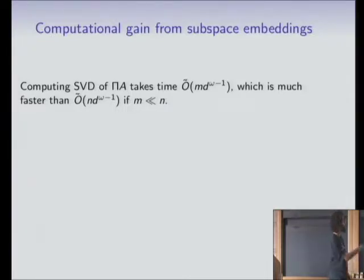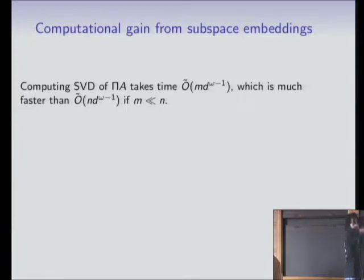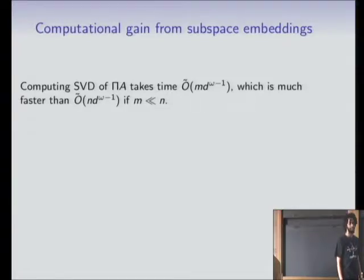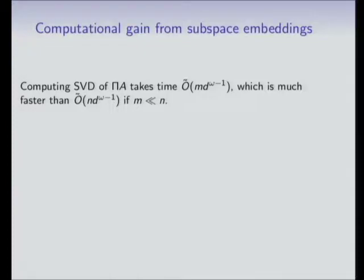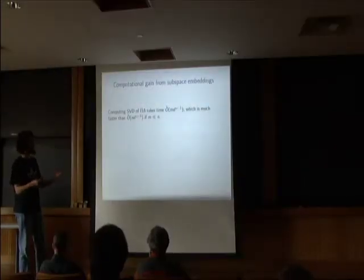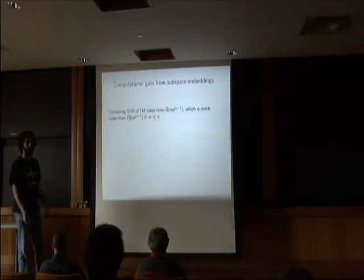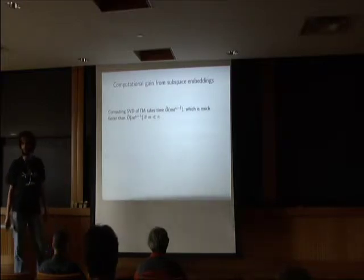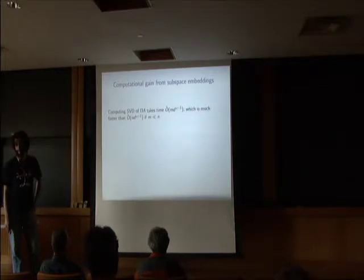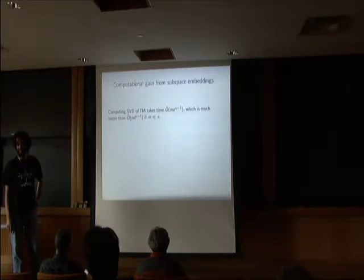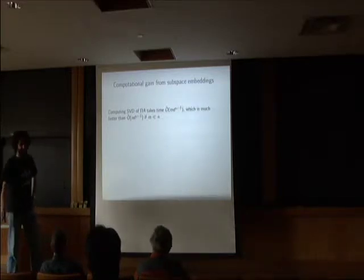Computing the SVD of pi*A is faster if M is much less than N — we're shooting for M approximately D. This is beneficial for tall skinny matrices. We save on the N part: an N-by-D regression can be quickly turned into a roughly D-by-D regression problem. Note that A is often very sparse, so you don't need omega-based algorithms, but pi*A might be dense — I'll get to that very soon.